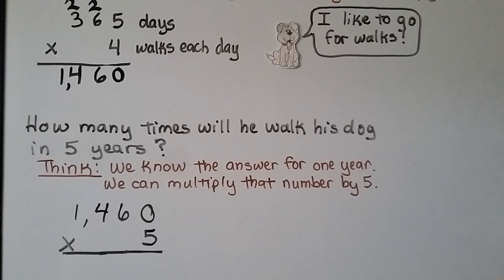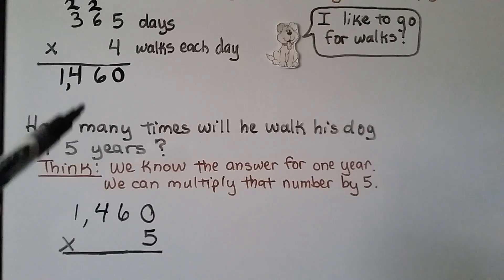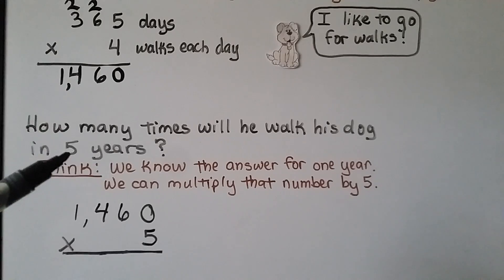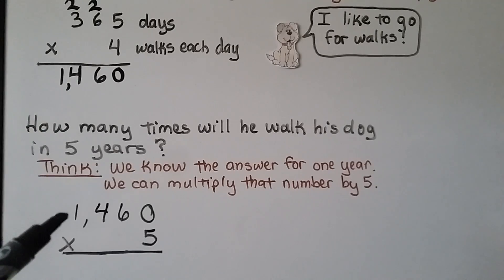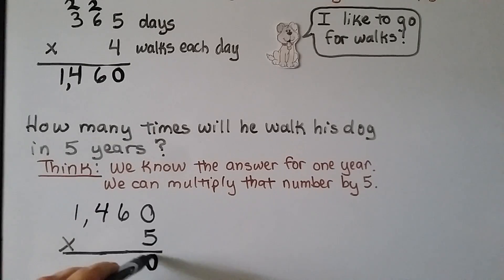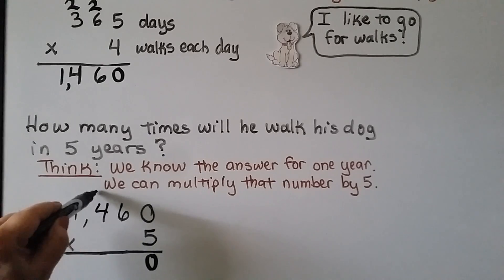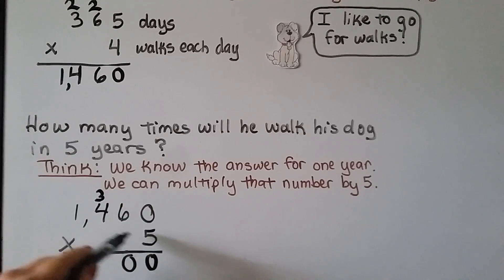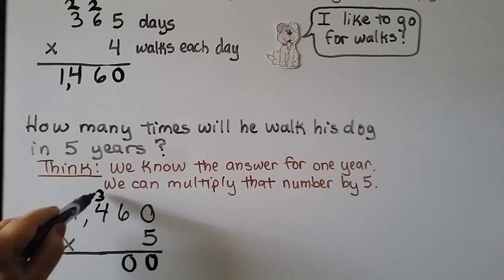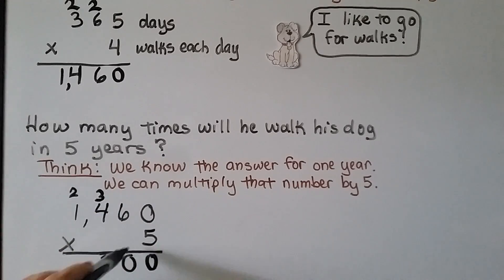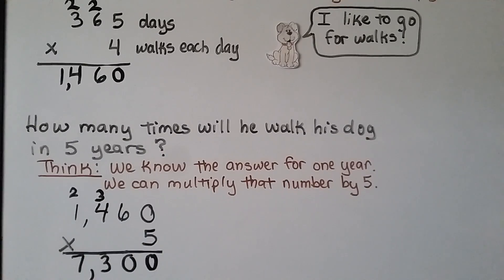So how many times will he walk his dog in five years? We know one year is 1,460 walks. For five years, we have 1,460 times 5. We start with the ones: 5 times 0 is 0. Five times 6 is 30 — regroup the 3, put the 0 down. Five times 4 is 20, plus 3 more is 23. Five times 1 is 5, plus 2 more is 7. In five years, that would be 7,300 walks.